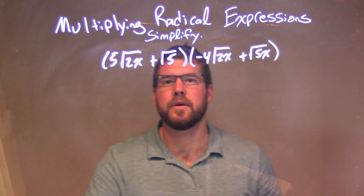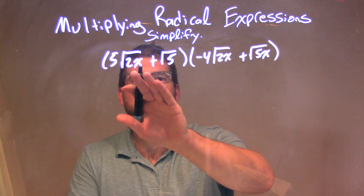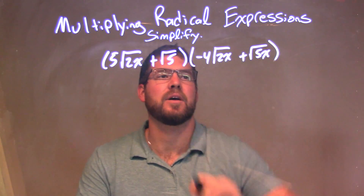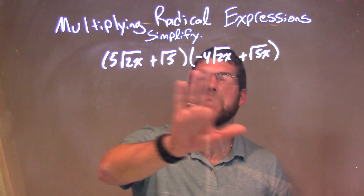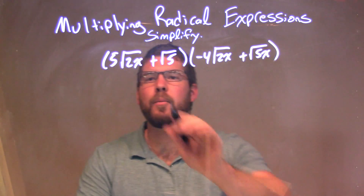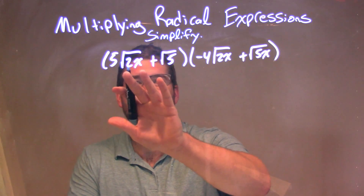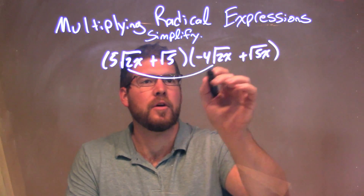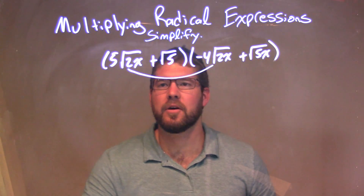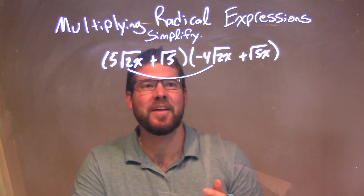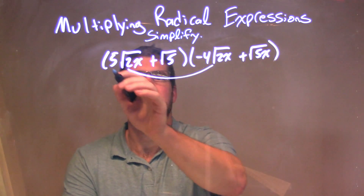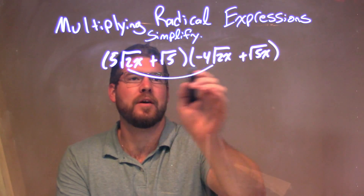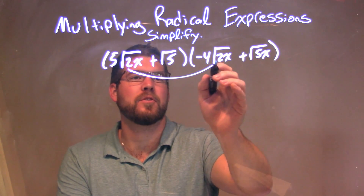What I want to do here is, since I cannot simplify within each parentheses, I'm going to multiply all parts of my first parentheses times all parts of my second parentheses. So I draw my arcs to make sure I've done that step.